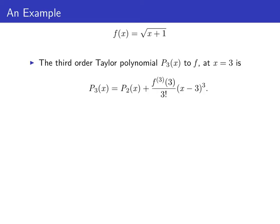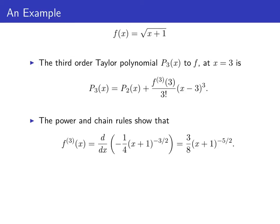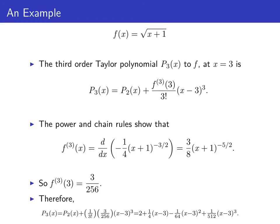To find the third order Taylor polynomial for f centered at x equals three, we already know p sub two of x, so we just need the third derivative of f evaluated at three. The third derivative of f at x is three eighths times x plus one to the negative five halves, so the third derivative evaluated at three is three over 256. Therefore p sub three of x equals p sub two of x plus three over 256 divided by three factorial times x minus three cubed, giving us two plus one quarter times x minus three minus one over 64 times x minus three squared plus one over 512 times x minus three cubed.